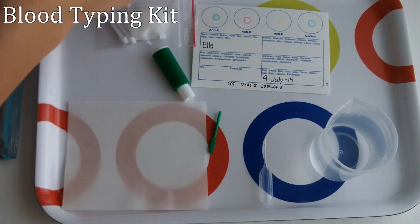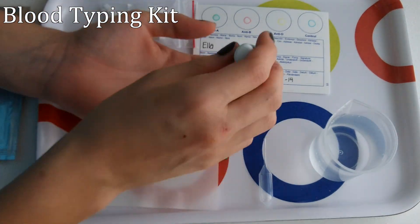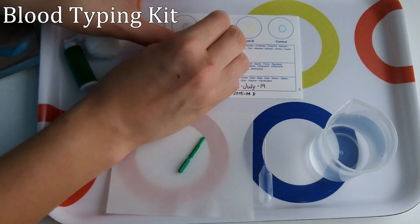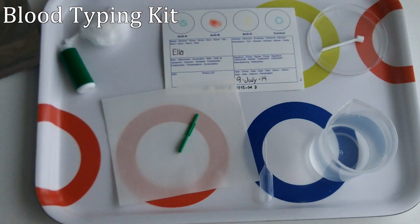I cleaned my fingertip, then used a lancet to draw blood. I collected samples of my blood on the four Eldon sticks provided, then placed the blood into the center of the colored circles.